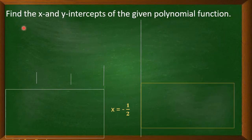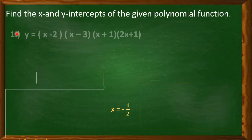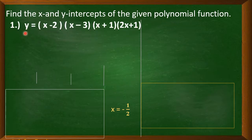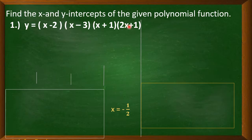Now let's have the example. Find the x and y-intercepts of the given polynomial function. Number one: y is equal to (x − 2)(x − 3)(x + 1)(2x + 1). The given polynomial function is in factored form.